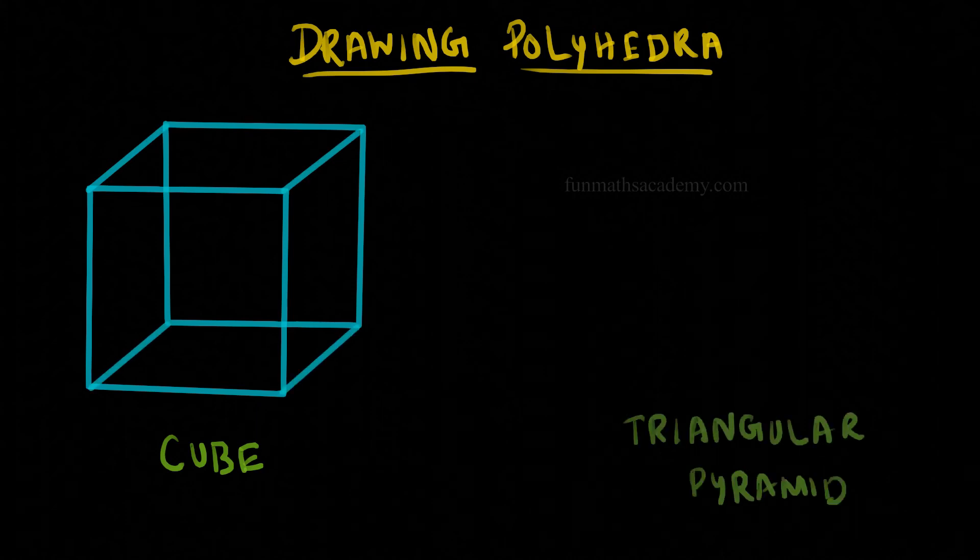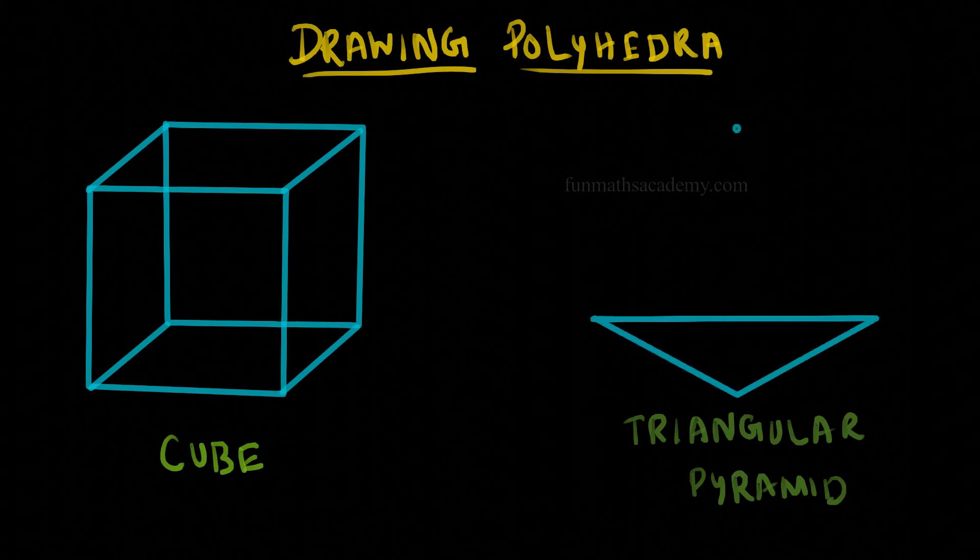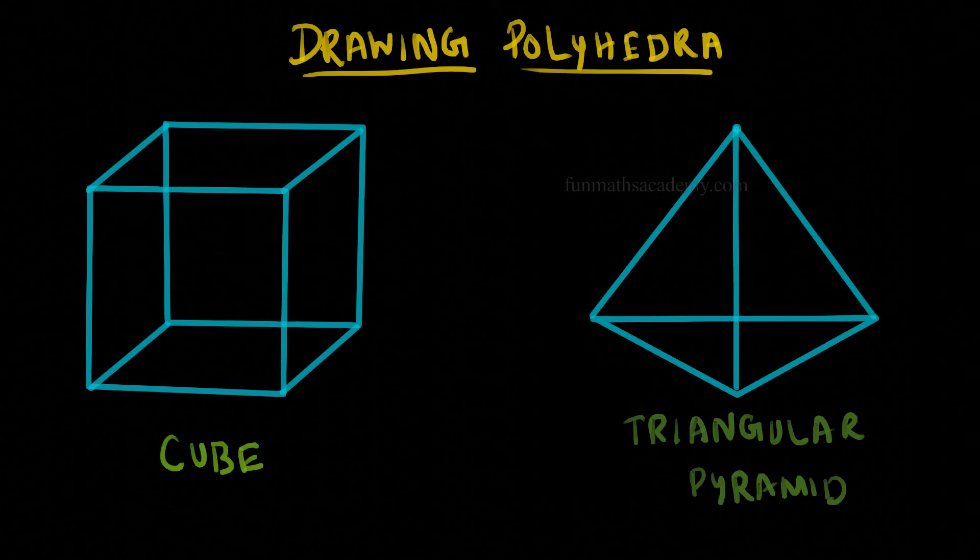To draw a triangular pyramid, first draw a triangle, then place a point above and then connect each vertex to that point. That's all. This is a triangular pyramid.